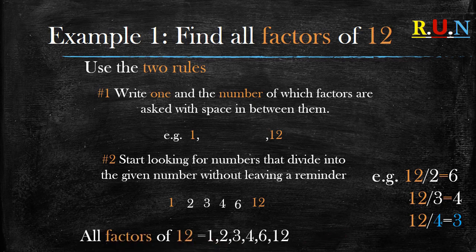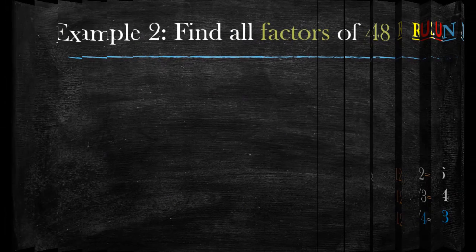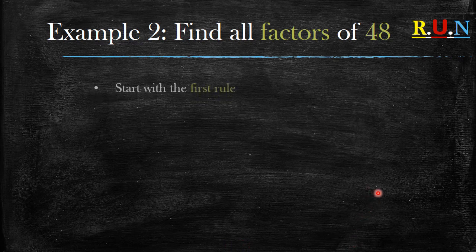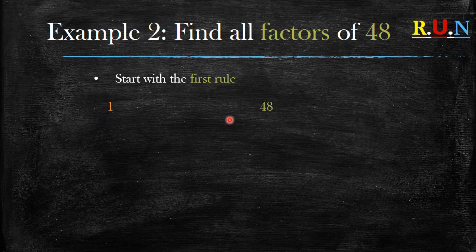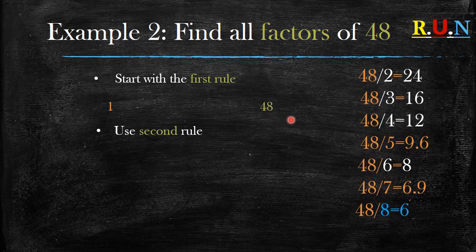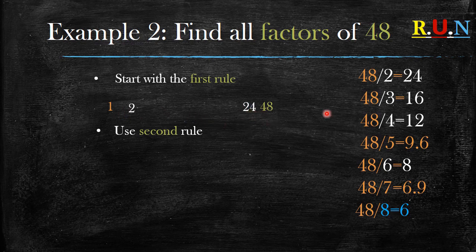All factors of 12 are 1, 2, 3, 4, 6, and 12. Now let's look at example number two: find all factors of 48. We start with rule one — write 1, space, 48. Then rule two: 48 divided by 2 gives you 24, a whole number, so write the 2 on this side and 24 on the other. 48 divided by 3 gives you 16 — a whole number — so write 3 on this side and 16 on the other. 48 divided by 4 gives you 12, so write 4 on this side and 12 on the other.